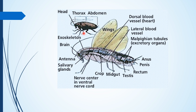This is the outline of the general external features of Cockroach. In this diagram, you can see it is divided into head, thorax, and abdomen. This is the gross idea of the internal anatomy — that is, brain, antenna, salivary glands, veins, crop, midgut, testes, rectum, penis, anus, and various other structures are seen in this diagram.